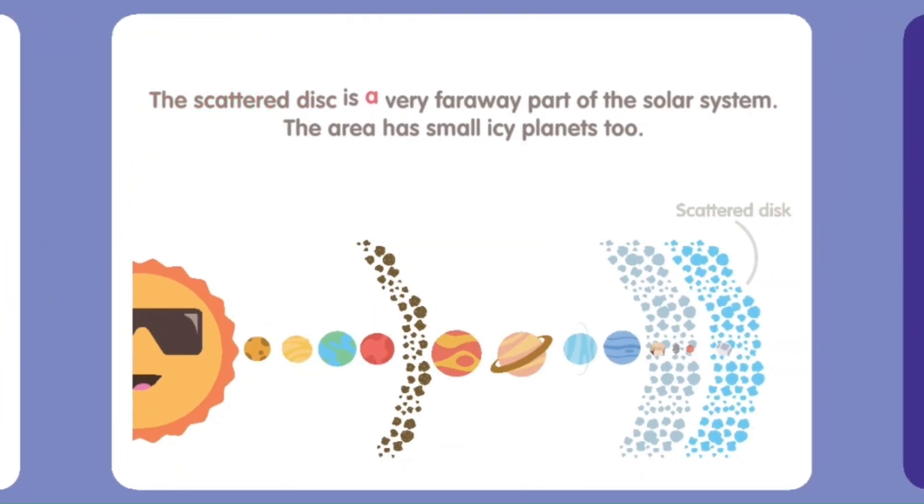The scattered disk is a very far away part of the solar system. The area has small icy planets too.